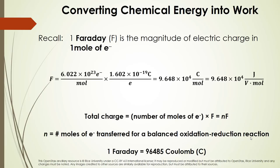One Faraday is the magnitude of electric charge in one mole of electrons. The total charge transferred in any of these reactions is the number of moles of electrons times Faraday's constant — NF. N is the number of moles of electrons transferred for a balanced oxidation-reduction reaction, per mole of reaction. One Faraday is 96,485 coulombs.